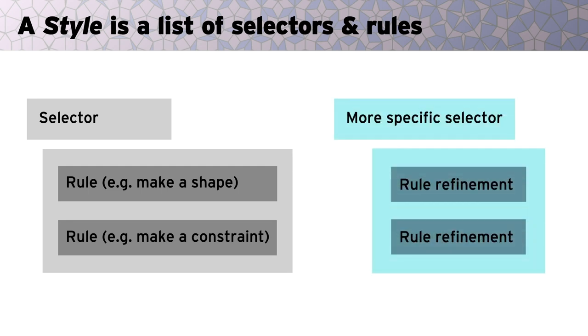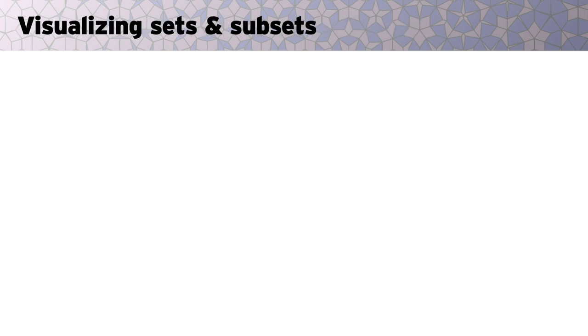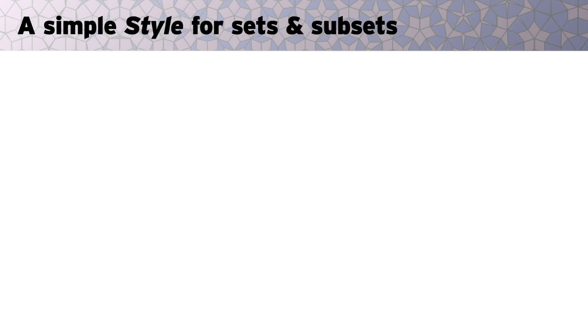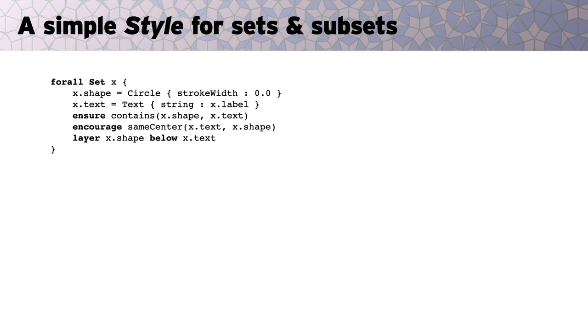Rules can then be refined by cascading, in other words, by adding more specific selectors and additional declarations. For example, let's say we want to visualize sets as Venn diagrams. We start with a generic rule, which translates sets into labeled circles. The for all keyword indicates that the rule gets applied to all sets appearing in the substance code.